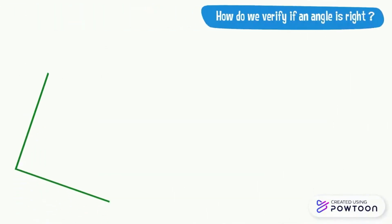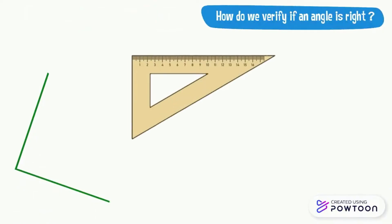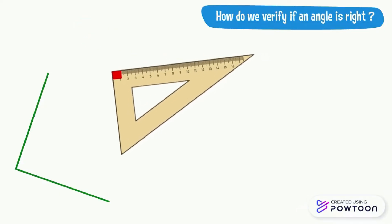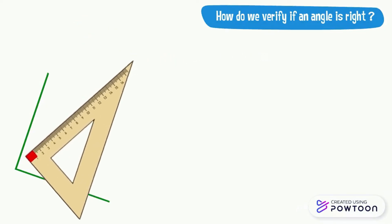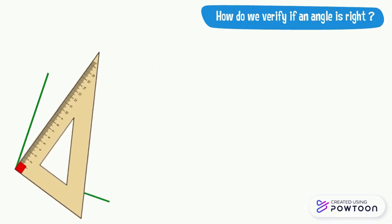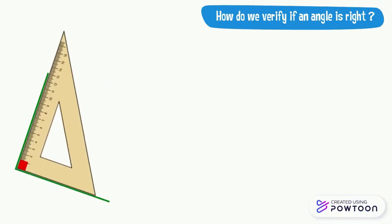How do we verify if an angle is right? To verify that an angle is right, we use a set square. First, we start to locate the right angle of our set square. Then, we try to coincide the right angle of the set square with the angle drawn by placing the sides of the right angle of our set square on the sides of the drawn angle.